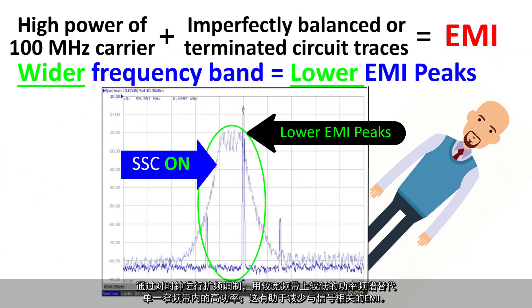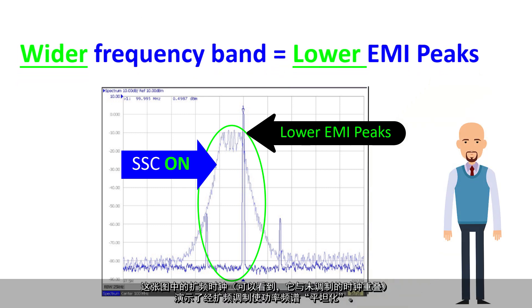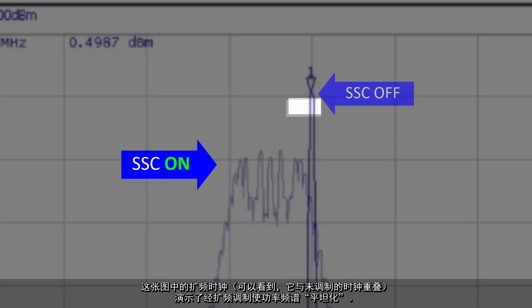This reduces the EMI associated with the signal. The spread spectrum clock in this image, where we see it overlaid with the unmodulated clock, demonstrates the flattening of the power spectrum that spread spectrum modulation causes.